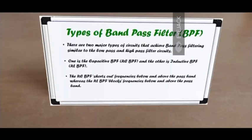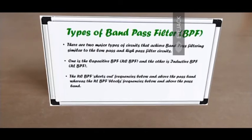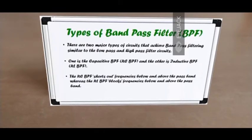Let's talk about the types of bandpass filters. There are two major types of circuits that achieve bandpass filtering, similar to lowpass and highpass. One is the capacitive bandpass filter, also referred to as the RC bandpass filter, and the other is the inductive bandpass filter or the RL BPF. The RC BPF shorts out frequencies below and above the passband, whereas the RL one blocks out those frequencies.